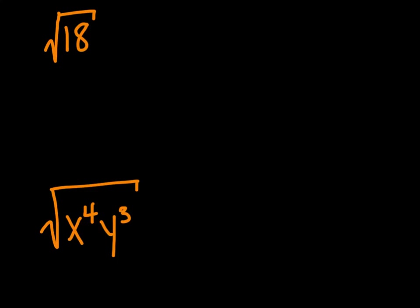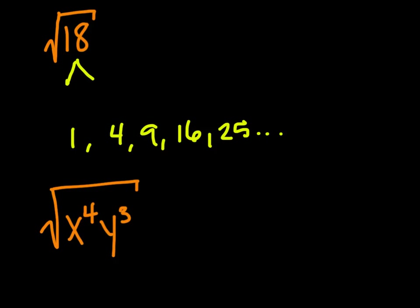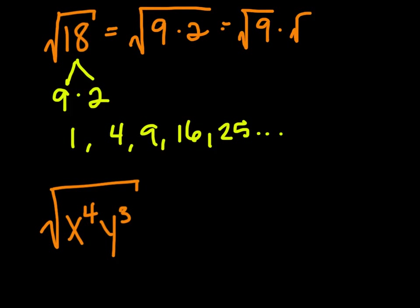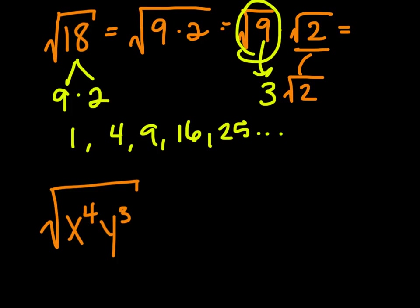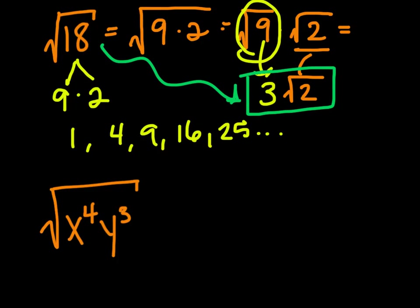If we look at the number 18, we need to think about what square numbers multiply to get 18. The first few perfect squares are 1, 4, 9, 16, 25, and so on. Looking at 18, 9 goes into 18 two times. So we can break down 18 into the square root of 9 times 2, or the square root of 9 times the square root of 2. The square root of 9 is 3, and we still have the square root of 2. So the simplified version of the square root of 18 is 3 square root of 2.